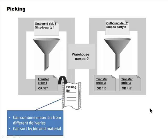Picking is the process where you physically pick the items from the warehouse. You have the outbound delivery and then you create a transfer requirement for it to be picked. The warehouse people will then create the transfer order, but here it's just sort of combined.